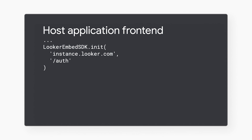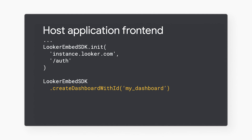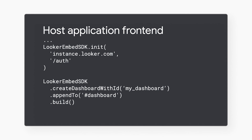Now let's configure the Embed SDK to build your iframe. You call the createDashboardWithID method with the ID of your dashboard so the SDK embeds the correct Looker content. Next, you call the appendTo method to tell the SDK where to insert the iframe into your host application DOM. With this basic configuration finished, you call the build method. The Embed SDK automatically fetches an SSO embed URL from the endpoint you configured, creates an iframe with its source attribute set to that URL, and appends the iframe to the specified HTML element.